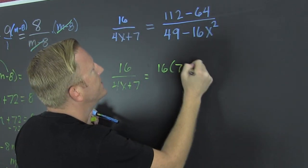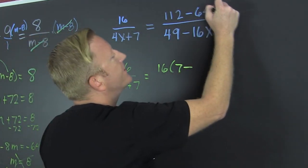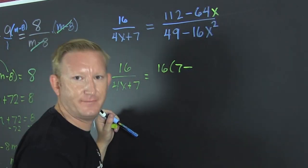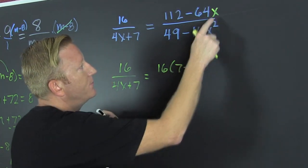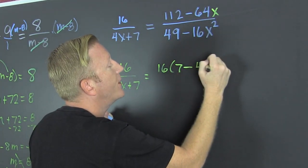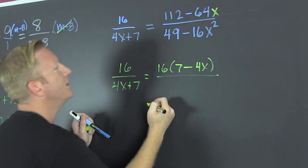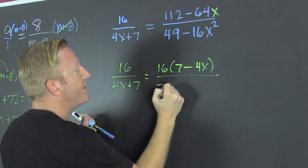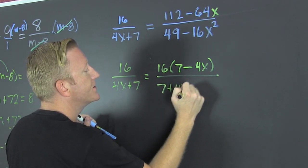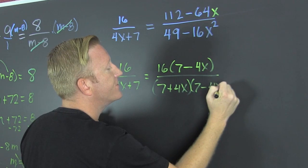And then minus. Really? There's no x's? There's supposed to be an x there. Sorry. Catch that. So then 16 times what is 64? That's a 4x. And then that's all over. That factor. That's 7 plus 4x. 7 minus 4x.